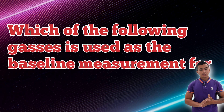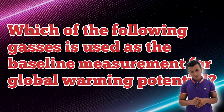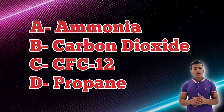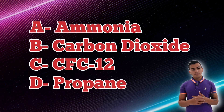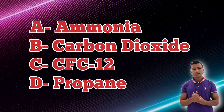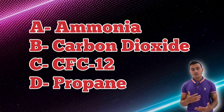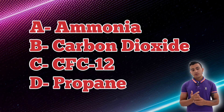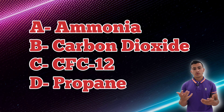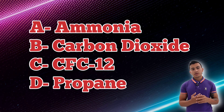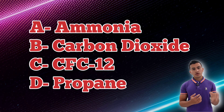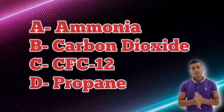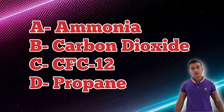Which of the following gases is used as the baseline measurement for global warming potential? Ammonia would not be it, CFC-12 is a refrigerant and not a baseline measurement, and propane is essentially the same category as ammonia — if you have two answers that are basically the same, neither is the answer. The baseline measurement for global warming potential is carbon dioxide.